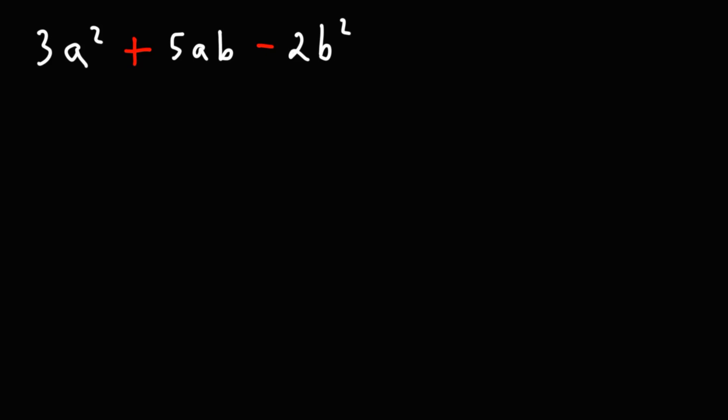In this video, we're going to talk about how to factor a trinomial with at least two variables. So consider the example that we have: 3a squared plus 5ab minus 2b squared. How can we factor this particular expression?